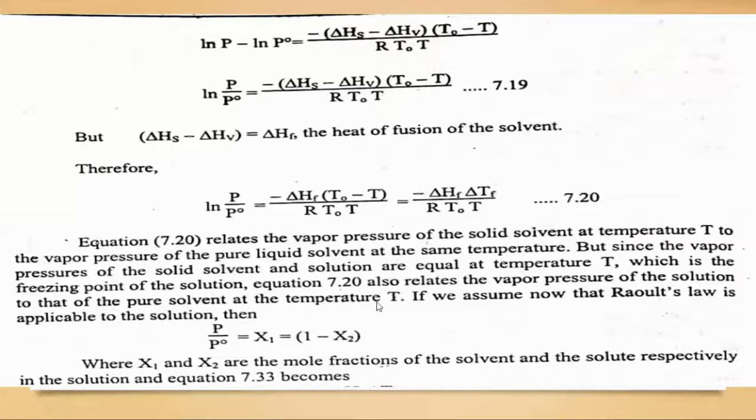From Raoult's law, we obviously apply: p = p_not × x_1, or...